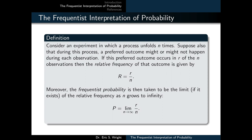Moreover, the frequentist probability is then taken to be the limit, if it exists, of the relative frequency as n grows to infinity.